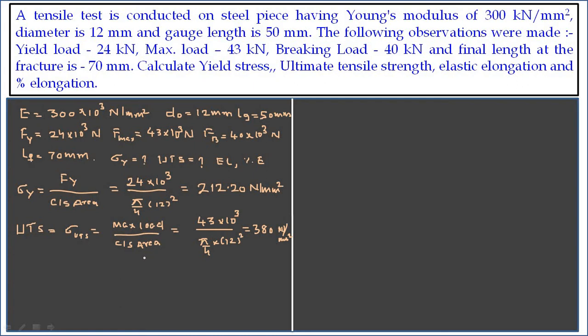In this way we got the values for the yield stress and ultimate tensile stress, which is expressed in terms of ultimate stress. The third point is we need to calculate the elastic elongation. This elastic elongation is quite related with the Young's modulus.